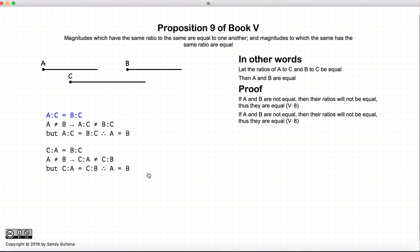And so there we have it. We have two ratios are equal, a to c and b to c, then a and b are equal.